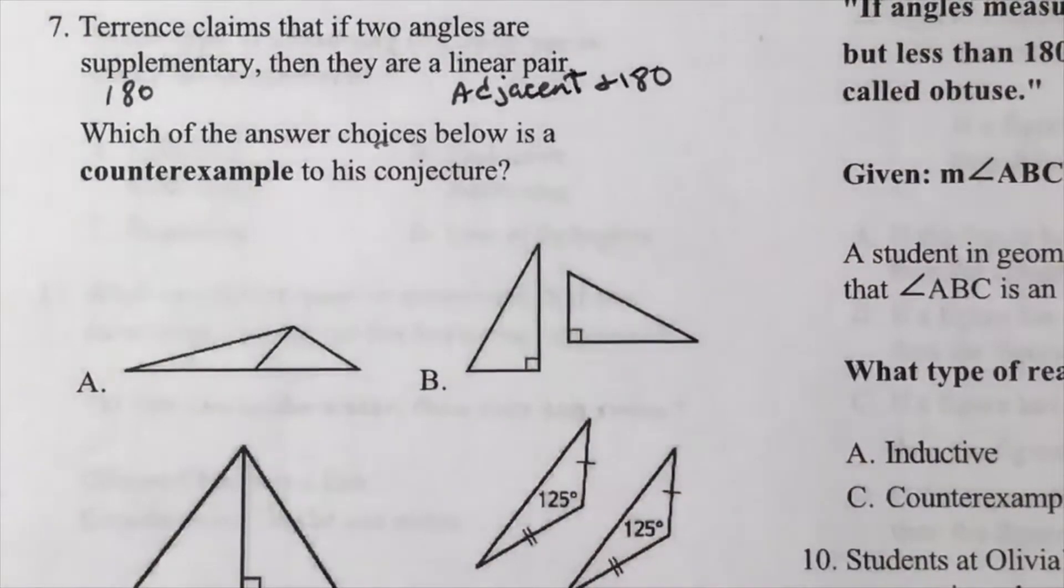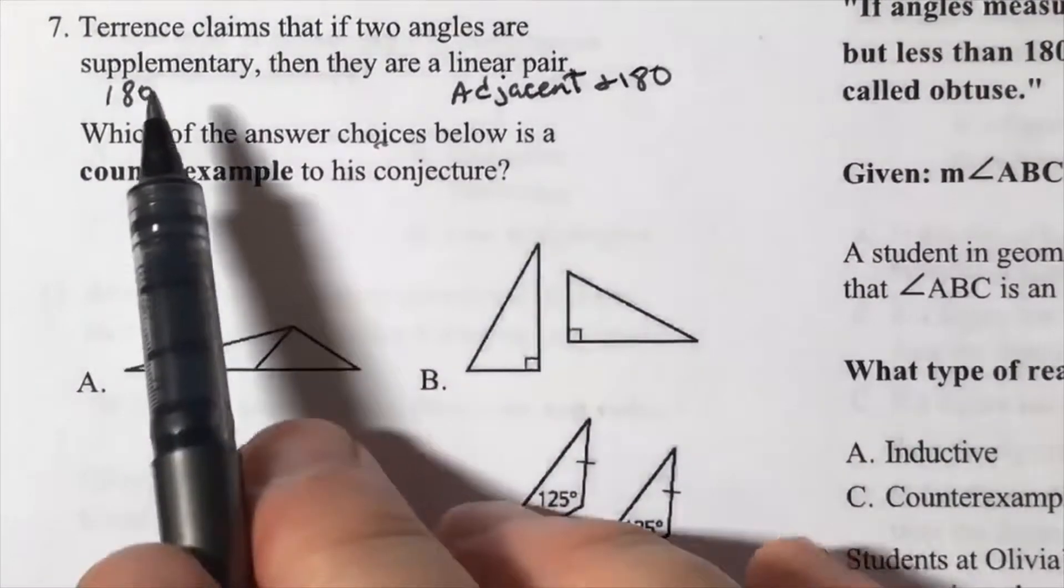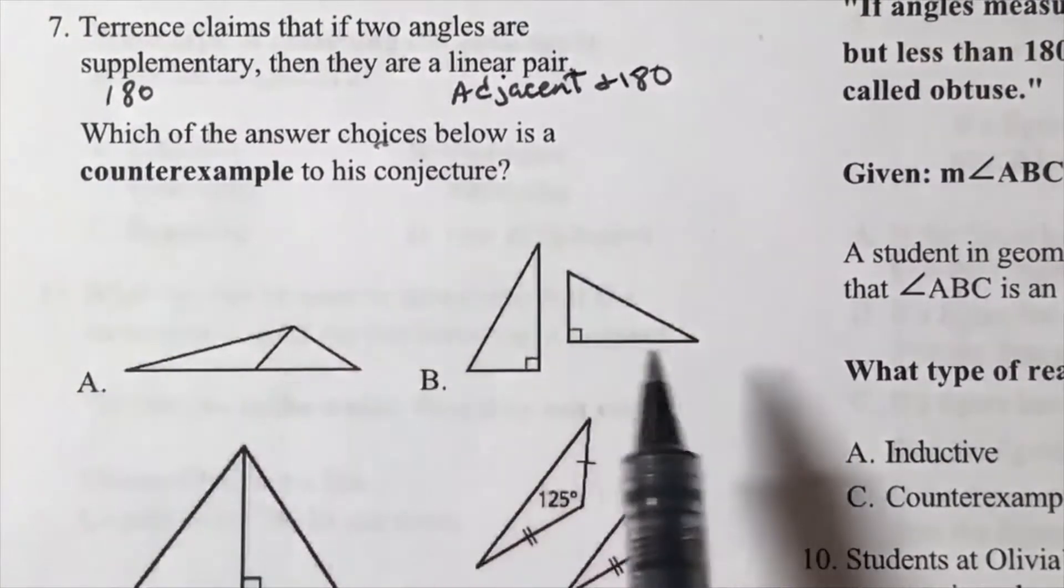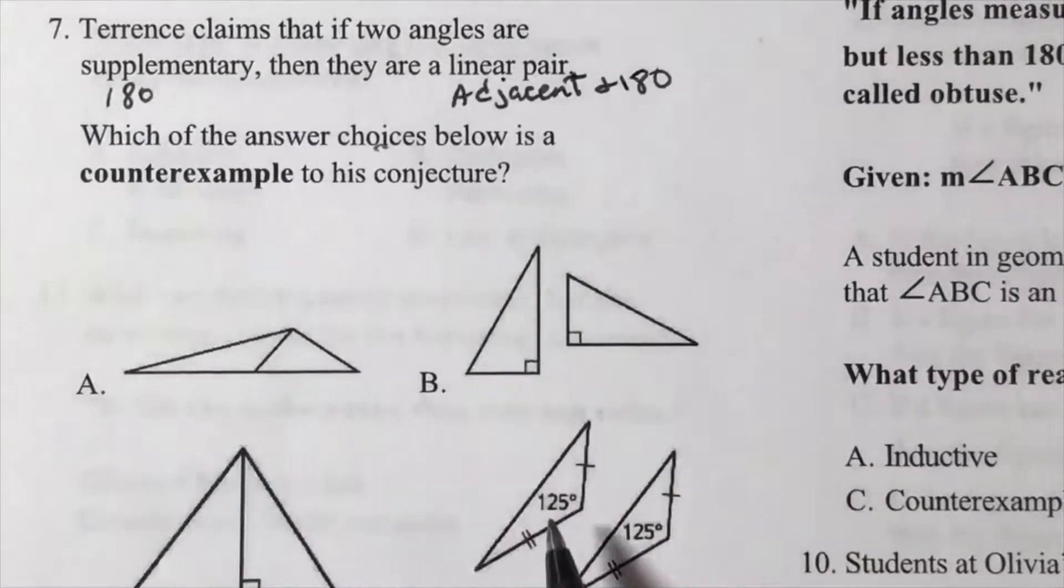Okay, so if two angles are supplementary, two angles that add up to 180, clearly this is not satisfying the hypothesis.